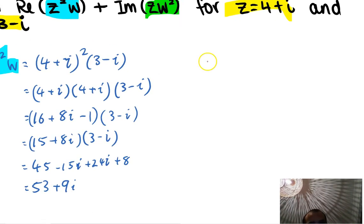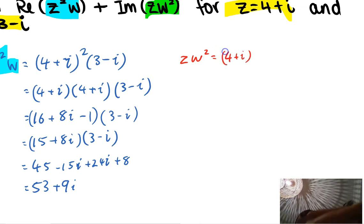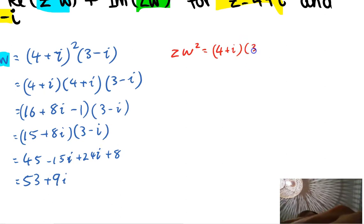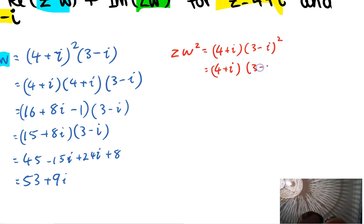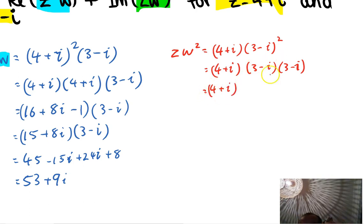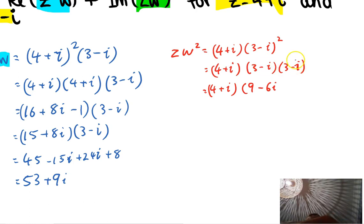Now let's find z w squared. So z w squared is 4 plus i times 3 minus i times 3 minus i. I'll do the squared part first: 3 times 3 is 9, then negative 3i and negative 3i giving negative 6i, and negative i times negative i is i squared which is negative 1. Simplifying: 9 minus 1 is 8 minus 6i.